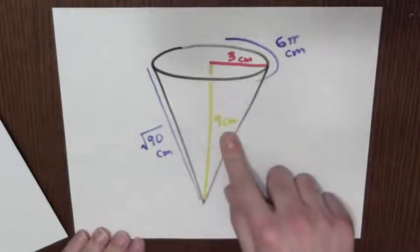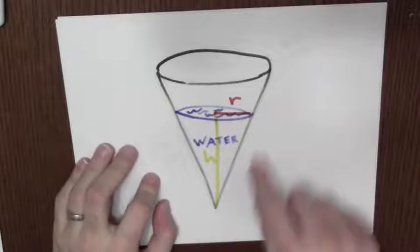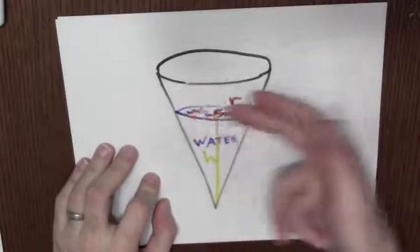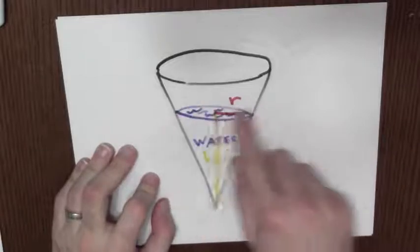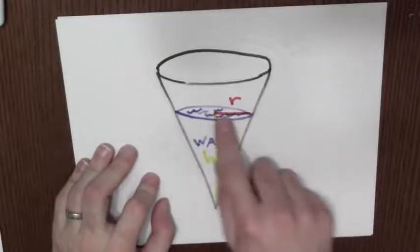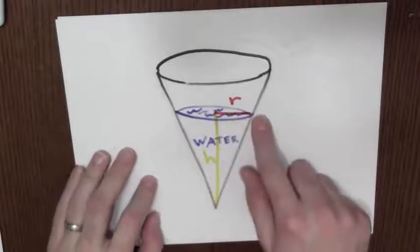How does that diagram relate to the water level? What I'm really interested in is how much water is in the cone. The water has some height, which I'm calling h, and the water itself forms a cone with some radius r.